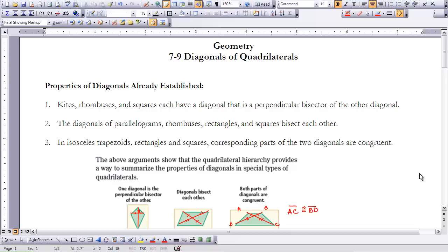And we know that in isosceles trapezoids, rectangles, and squares, corresponding parts of the two diagonals are congruent.